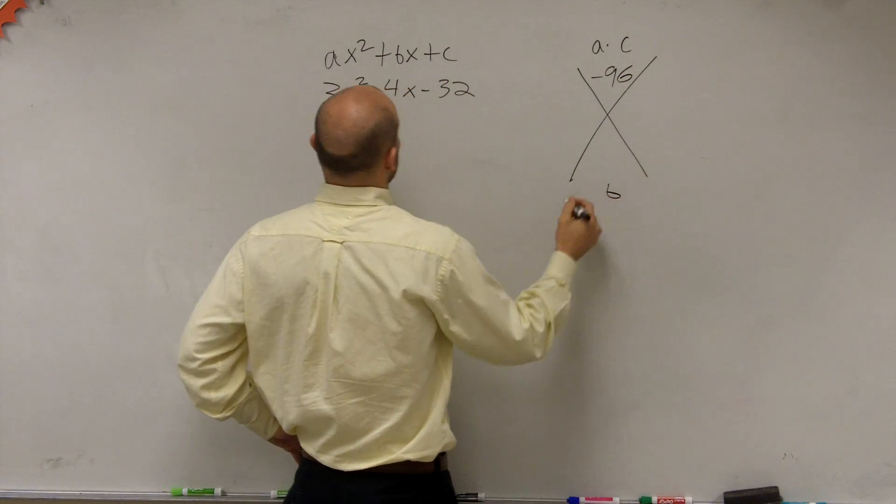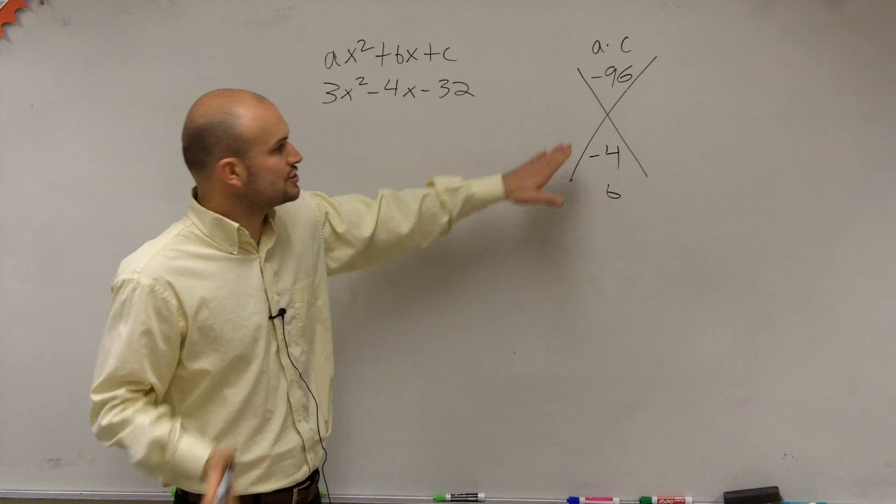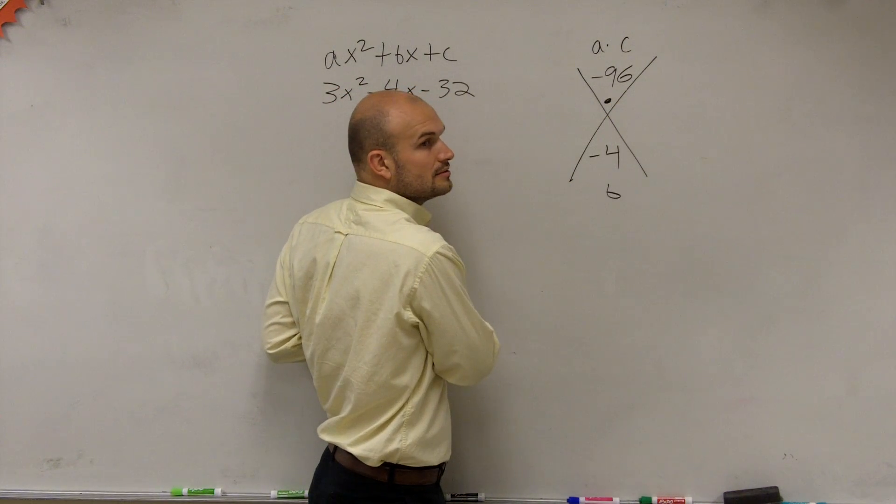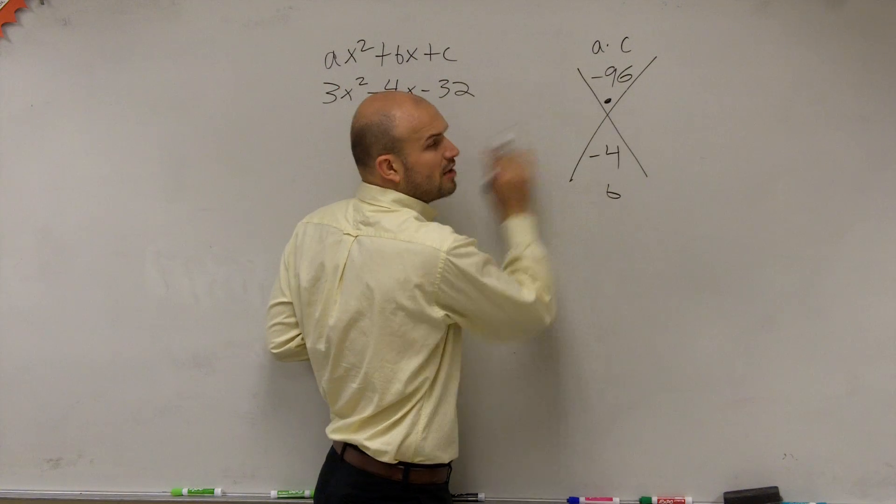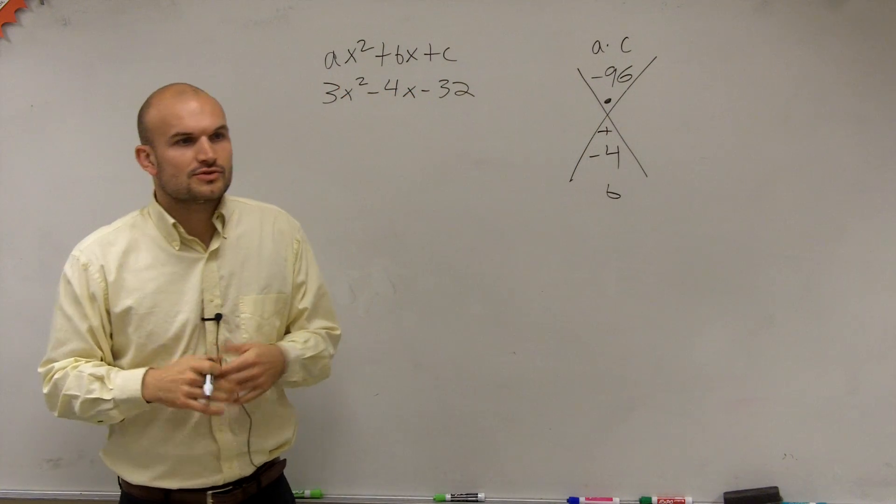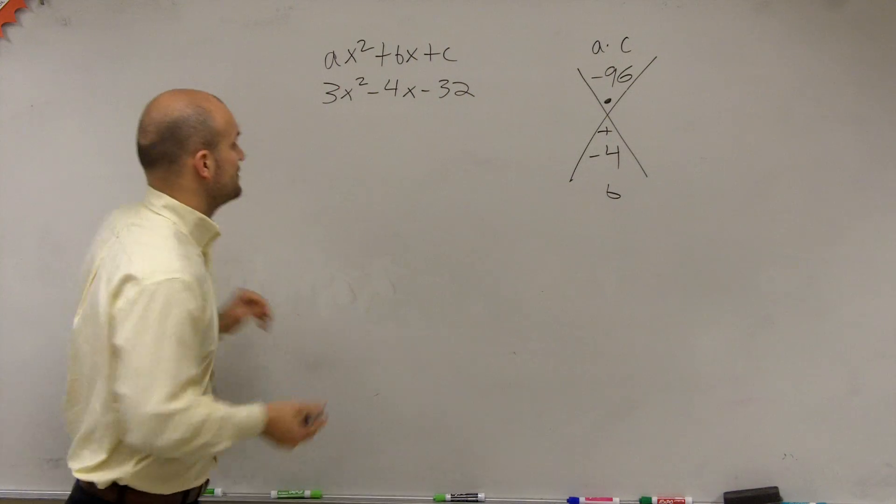And then we take our b on the bottom, which is negative 4. Then what I need to do now is determine what two numbers multiply to give me negative 96, but then add to give me negative 4. So we have to start looking through our factors, and we come up with negative 12 and 8.